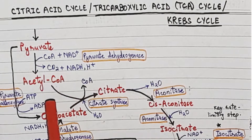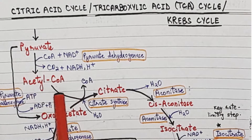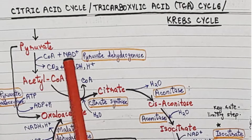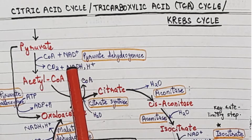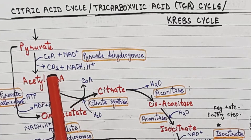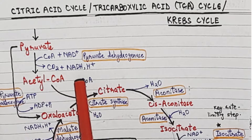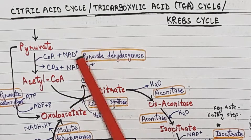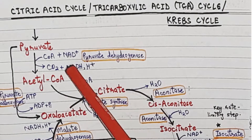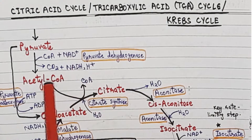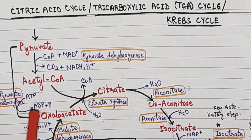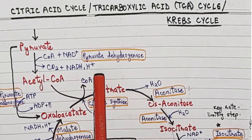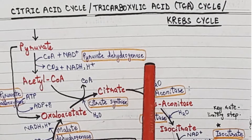Pyruvate is converted into Acetyl CoA. In this reaction, CoA is utilized and NADH is produced, along with carbon dioxide being released. So we get NADH as an energy product from this conversion.